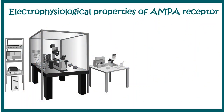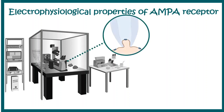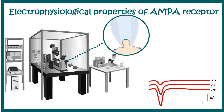To understand AMPA receptor kinetics more deeply, we need to examine electrophysiological parameters. We perform a whole-cell recording in voltage-clamp mode, holding the cell at a specific voltage and measuring the resulting current. This allows us to look at current traces directly.